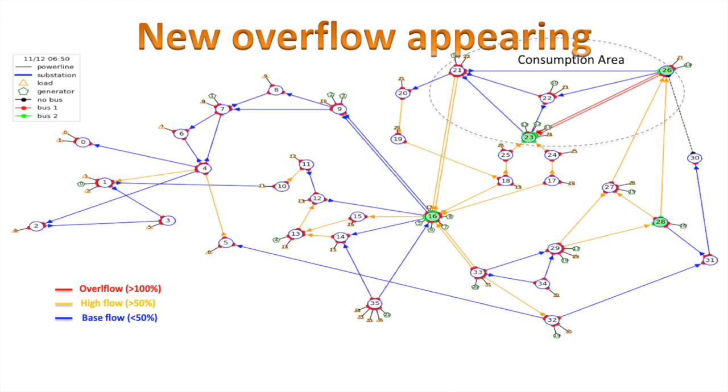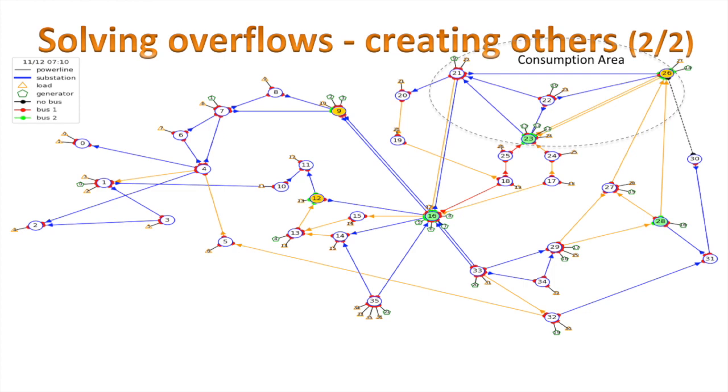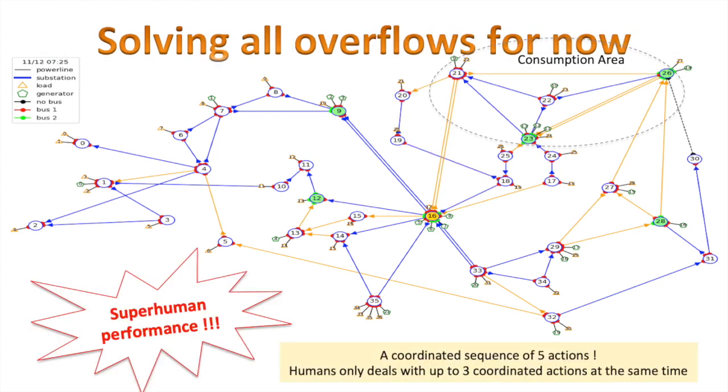45 minutes later, at 6:50 am, a new overflow appears because the consumption is increasing. A first new configuration at substation 23 solves it, but recreates the initial overflows. An additional sequence at three substations solves those overflows, but again creates some new ones in the other corridor. Finally, a last action at substation 16 solves it at 7:25 am. A sequence of five actions was temporarily needed, and this demonstrates some superhuman performance, because operators usually only deal with up to three coordinated actions at the same time to try solving an issue. This was quite a remarkable move from the agent. This is a demonstration that AI can help augment operators' knowledge about grid flexibilities on the way towards an assistant.